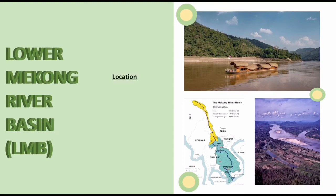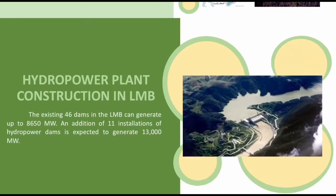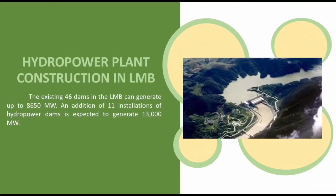The Lower Mekong River Basin is part of the Mekong River that covers the boundary of Laos, Thailand, Cambodia, and Vietnam. This river is the largest in Southeast Asia and is significant as it provides livelihood and opportunities to millions of people. It is used not only for agriculture and fisheries, but is also essential for irrigation, transportation, and power generation. Because of its diverse functionality, hydropower developments have been set forth over the course of years. Among the existing 64 dams in the Mekong River, 46 have been built in the Lower Mekong Basin, which could generate up to 8,650 megawatts of energy.